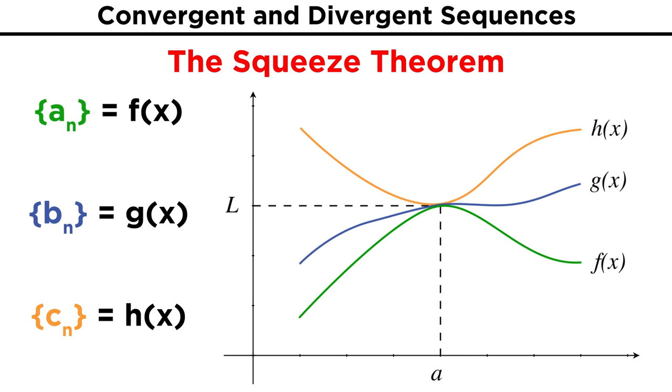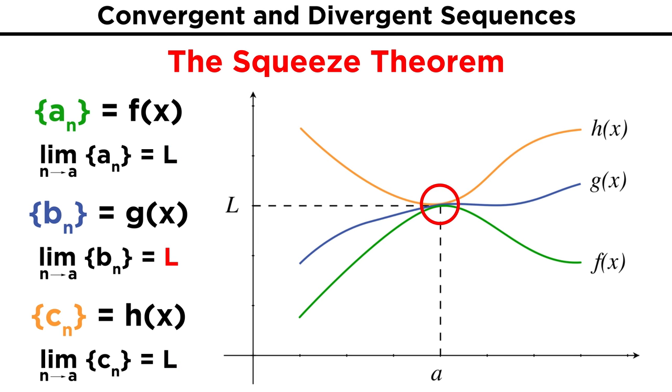This one says that if there are three sequences, A, B, and C, and B is always between A and C, then if A and C both have a limit of L, then B must also have a limit of L, because it is being squeezed in between these ones.